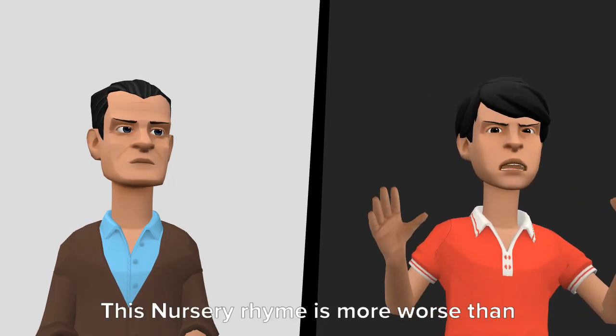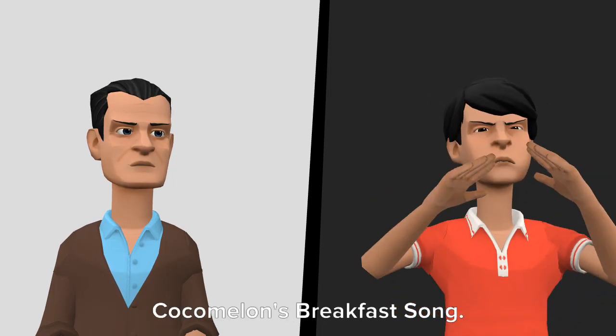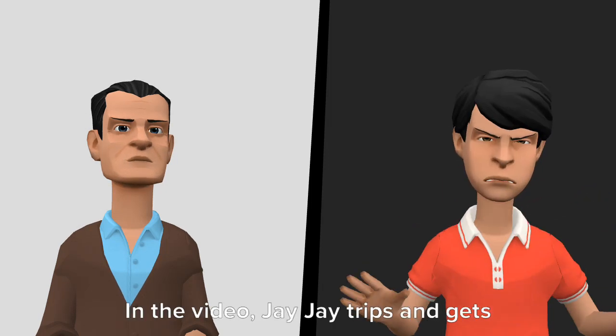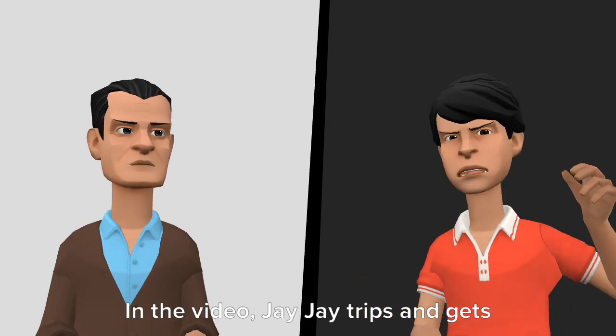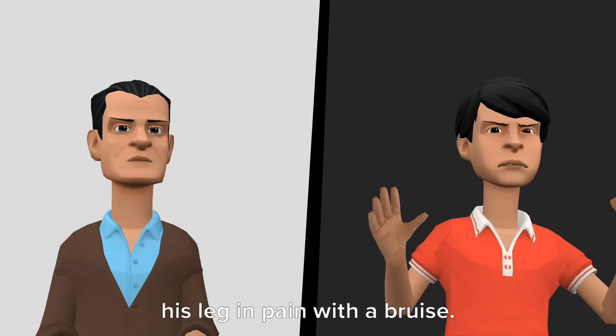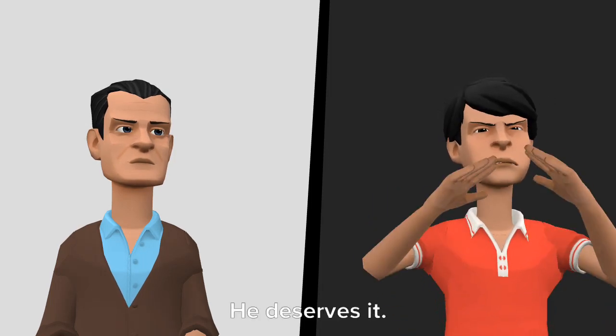Oh my god. This nursery rhyme is more worse than Cocomelon's Breakfast Song. In the video, JJ trips and gets his leg in pain with a bruise. Haha. He deserves it.